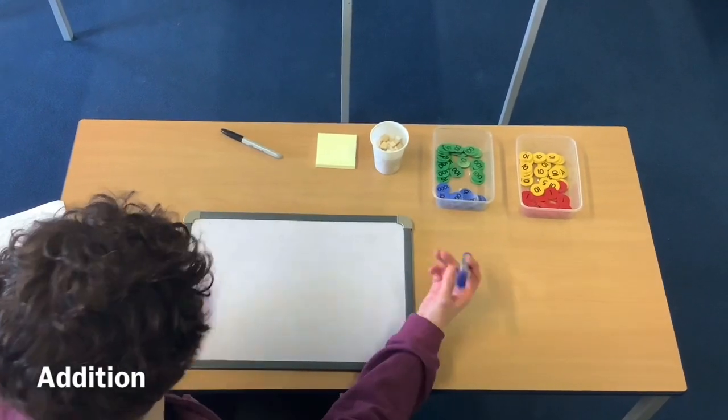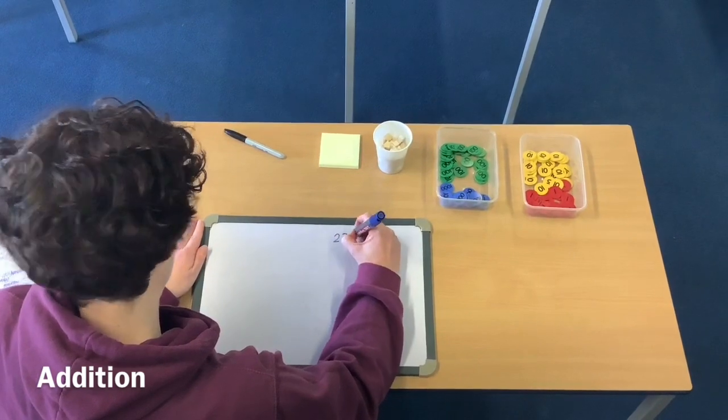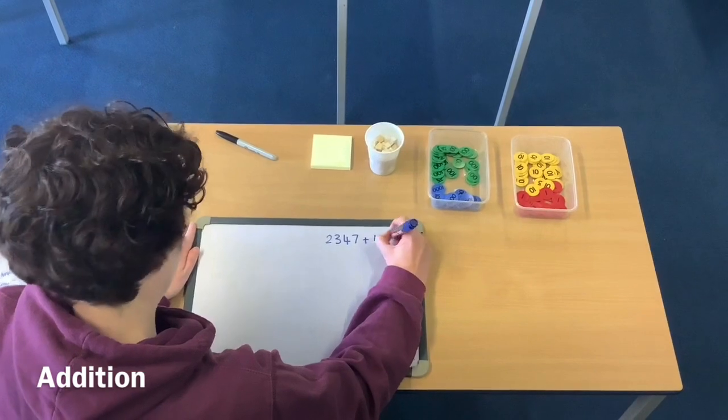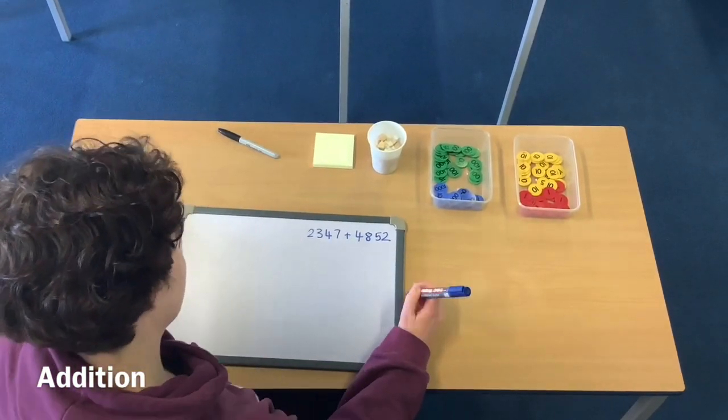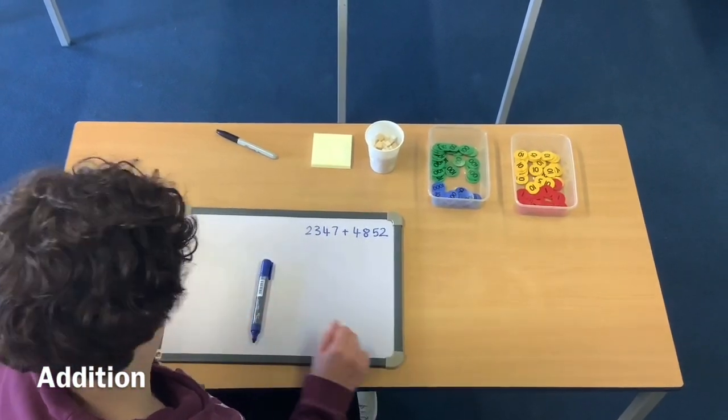So the first question we are going to have a go at answering is 2,347 and 4,852. This first question we are going to complete with place value counters along with the abstract.